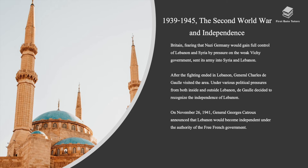Britain, fearing that Nazi Germany would gain full control of Lebanon and Syria by pressure on the Vichy government, sent its army into Syria and Lebanon. After the fighting ended in Lebanon, General Charles de Gaulle visited the area. Under various political pressures from both inside and outside Lebanon, De Gaulle decided to recognize the independence of Lebanon. On November 26th, 1941, General George Catroux announced that Lebanon would become independent under the authority of the Free French Government.